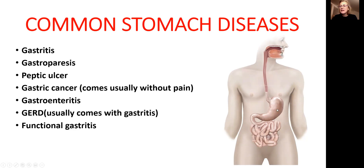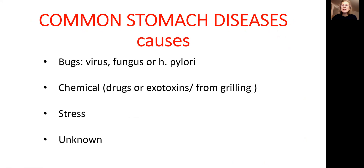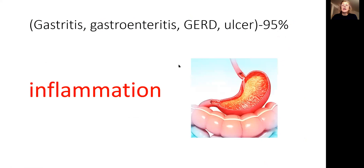Acid reflux usually comes with gastritis — when there is inflammation in the stomach, it can spread into the esophagus. Functional gastritis means that when you do a gastroscopy, there is nothing visible, but the person is still complaining about pain. Common causes of stomach disease include bugs, viruses, fungus, H. pylori, chemicals, drugs, exotoxins such as the black char from grilled meat or fish, stress, or unknown causes. 95% of all stomach diseases are from gastritis, gastroenteritis, acid reflux, or ulcer — all of that is inflammation.